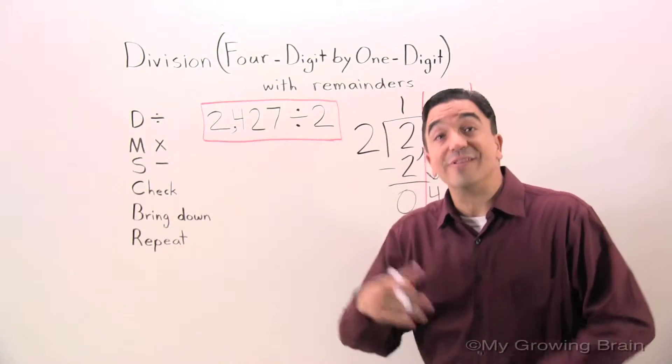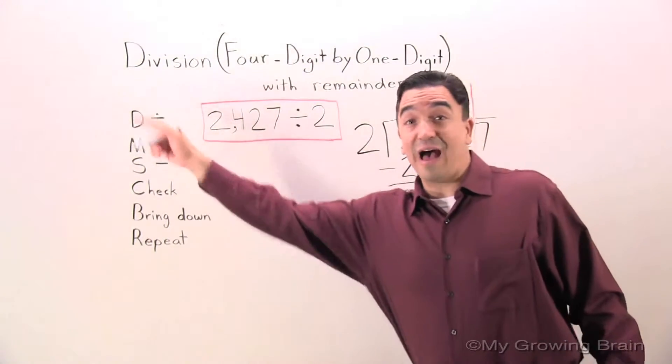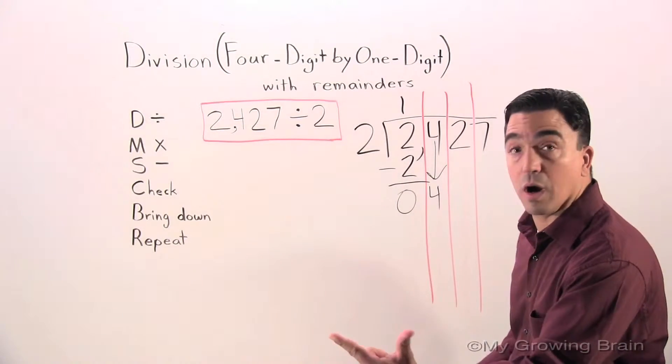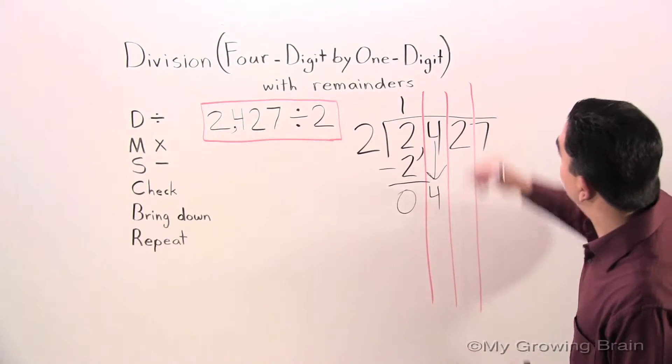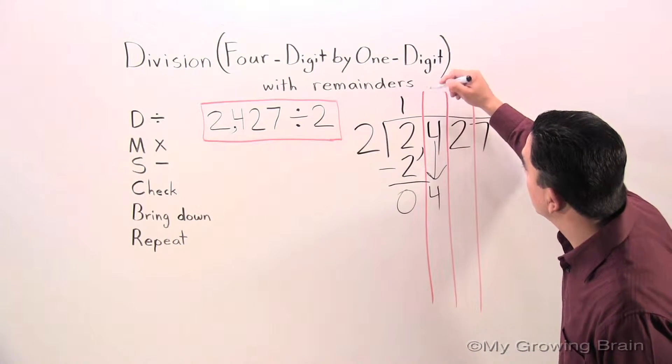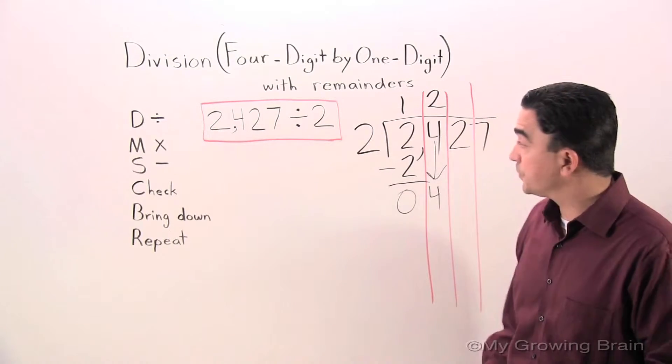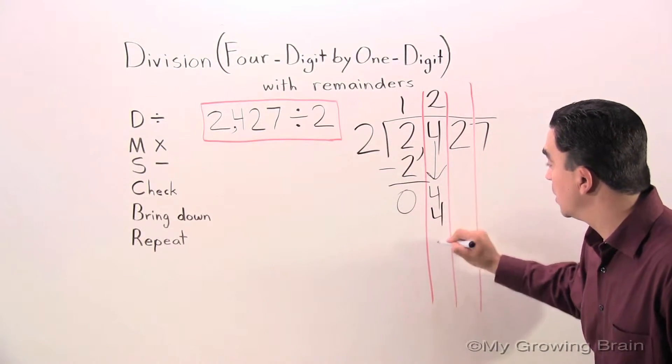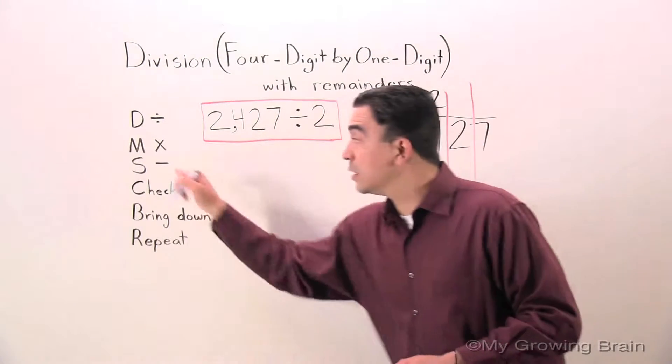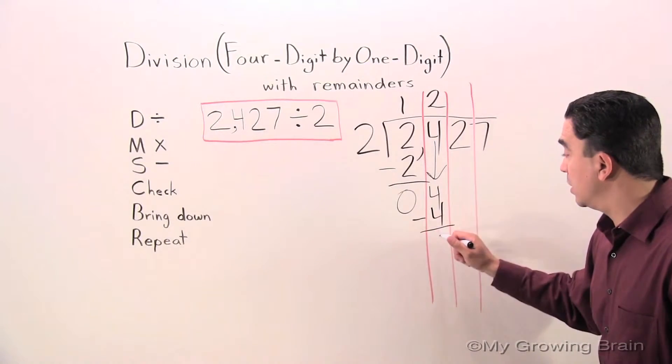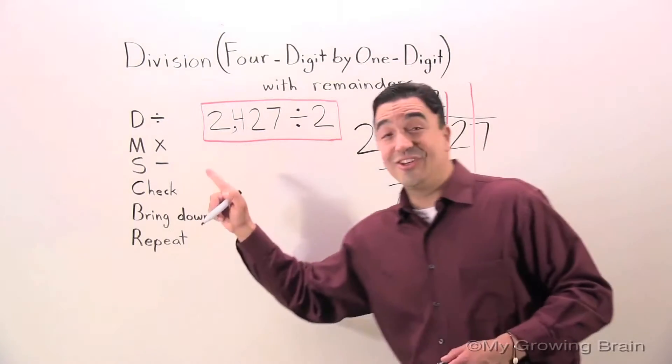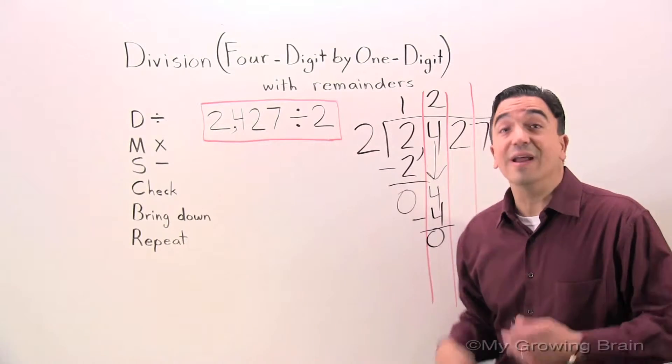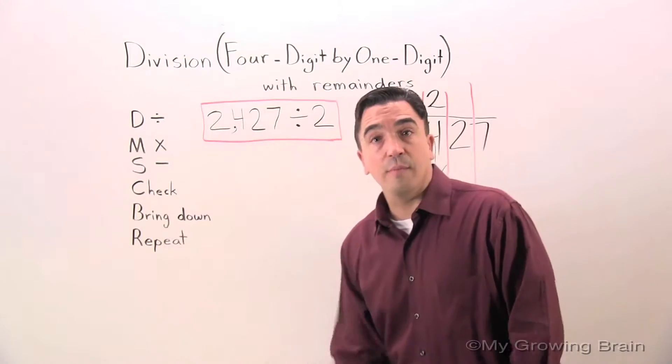Repeat the process. Now we're going back to the top. Divide. 2 into 4. 2 goes into 4 2 times. Multiply. 2 times 2? 4. Subtract. 4 minus 4? 0. Check. 0 is less than 2, the divisor. Keep on going. Bring down.